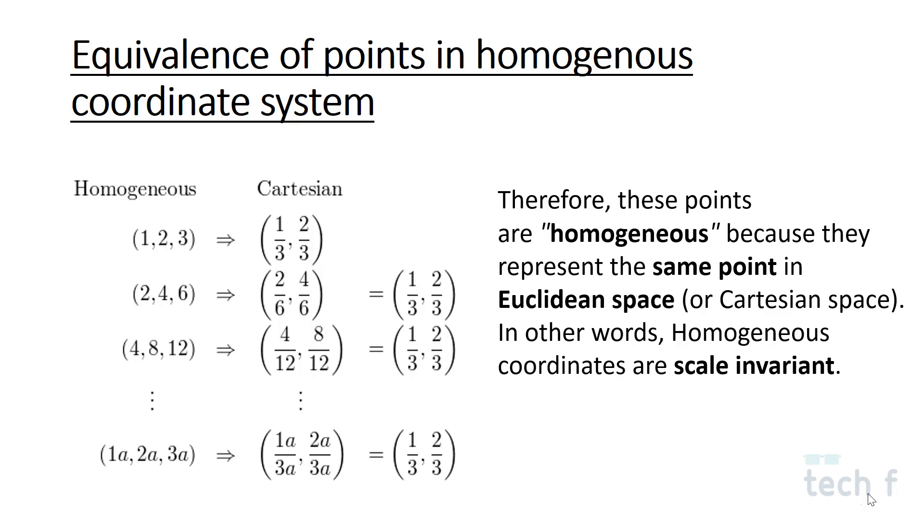That's why we call homogeneous coordinate systems scale invariant. They represent the same point in Euclidean space even though they have different values as X, Y, and Z. The examples are given in the slide.